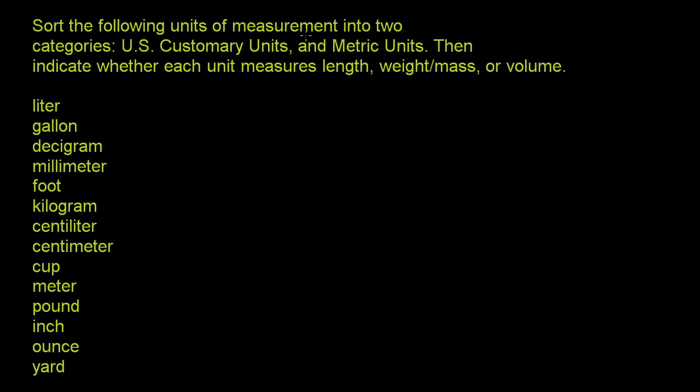We're asked to sort the following units of measurement into two categories: U.S. customary units and metric units. So these are just two different systems, and you'll get more and more familiar with them. Then indicate whether each unit measures length, weight, mass, or volume. So let's do the first. Let's see which of these are U.S. customary units versus metric units.